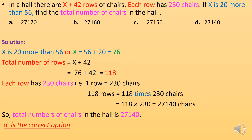In a hall, there are x plus 42 rows of chairs. Each row has 230 chairs. If x is 20 more than 56, find the total number of chairs in the hall.